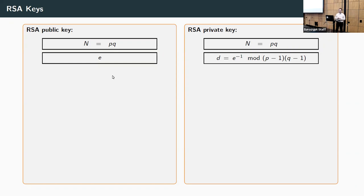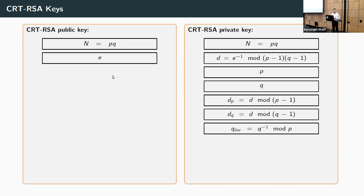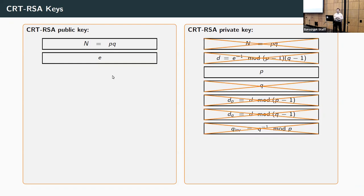That's not really how RSA is done in practice. In practice, you use CRT-RSA. The public keys are the same, but the private keys are larger, allowing more efficient decryption. Here we additionally store p and q, the two CRT exponents dp and dq — which is d reduced modulo p-1 or q-1 respectively — and q_inv, the multiplicative inverse of q modulo p. These CRT-RSA keys are obviously redundant; given the public key and p, all other values can be computed efficiently.